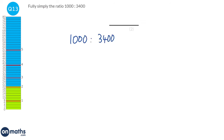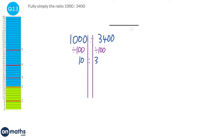Simplifying a ratio is very similar to simplifying fractions, but instead of doing the same thing to top and bottom, you do the same thing to left and right. Both numbers have two zeros at the end, so divide by 100 to get 10 and 34. Both are even, so divide by 2 to get 5 and 17. Since 5 and 17 are both prime, the answer is 5 to 17.